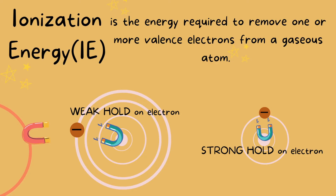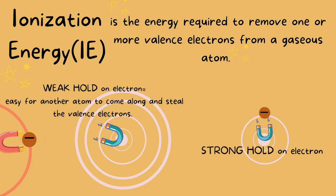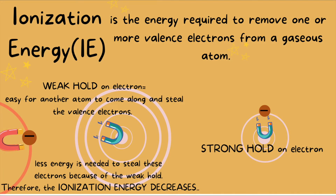If another atom comes around and wants to create a bond with the atom on the left, will it have a hard time taking away its electron? No, it will not be hard at all. It will be so easy for another atom to come and steal away this electron because the proton in the center has a very weak hold on it. So if it is easy to take the electron, then less energy is needed to steal it away.